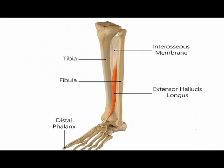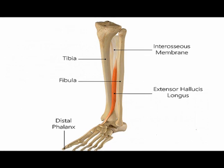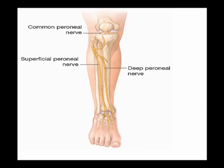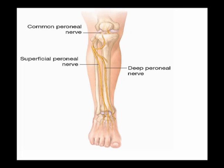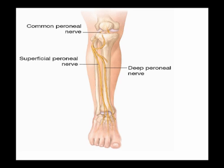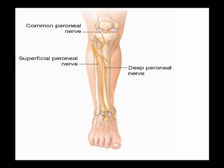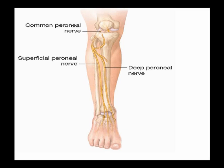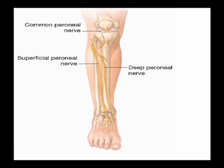When contracted concentrically, the fibularis tertius — also known as the peroneus tertius — performs dorsiflexion and ankle eversion. These four muscles are all innervated by the deep peroneal nerve from vertebral levels L4, L5, and S1. The deep peroneal nerve is also known as the deep fibular nerve. It is a branch of the common peroneal nerve, also known as the common fibular nerve, which is a branch of the sciatic nerve. Blood flow to the anterior compartment of the lower leg is supplied by the anterior tibial artery.